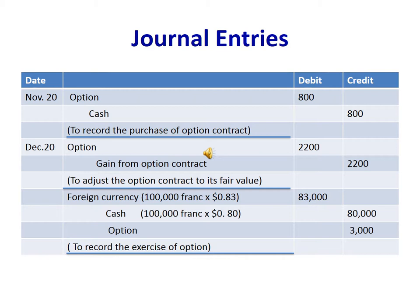Finally, we record the exercise of the option by receiving foreign currency at the market price of $0.83 and paying cash at the strike price of $0.08, and derecognizing the option contract with a value of $3,000.